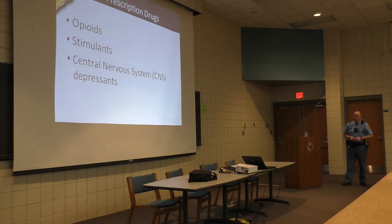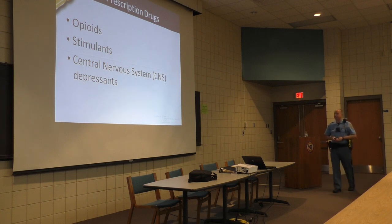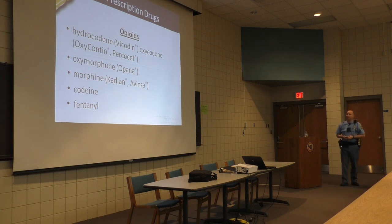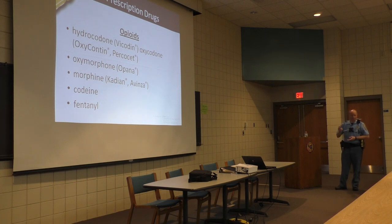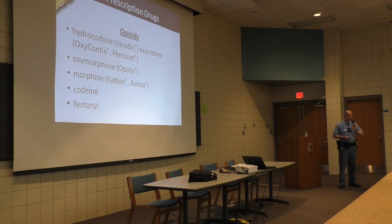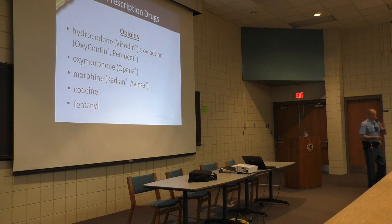Prescription pills include opioids, stimulants, and central nervous system depressants. Examples of opioids: hydrocodone, oxymorphone, morphine, codeine, and fentanyl. Fentanyl is probably one of the most recent dangerous drugs — it only takes a couple grains of salt equivalent to kill you. In bigger cities, officers carry an auto-injector pen to counteract opioid overdose. There have been cases where people walked into a house, got fentanyl on their boots, went home, and a small child crawling on the floor made contact and died. This is not something to joke around with — it's very dangerous.